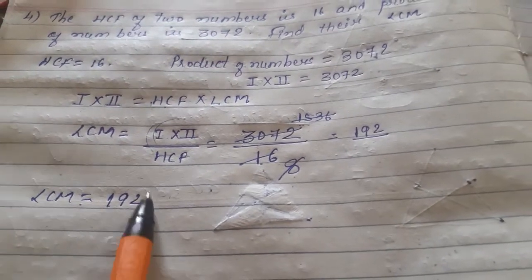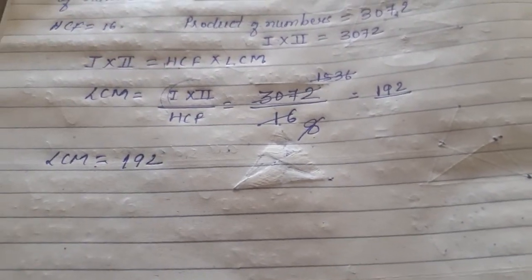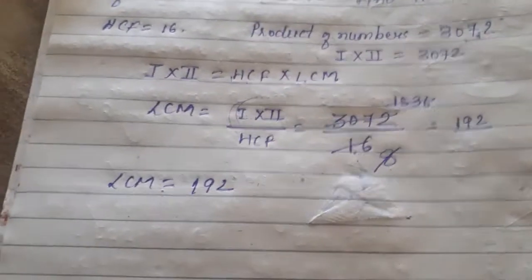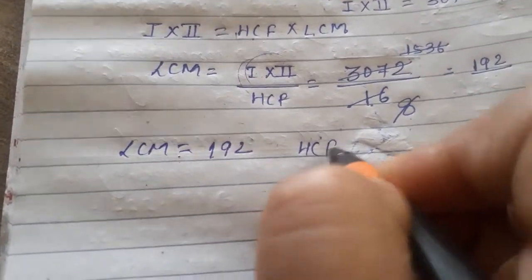HCF should be the factor of 192. Okay? Means whatever HCF is given to you, it should be a factor of LCM. Means in the question, then our solution is correct.